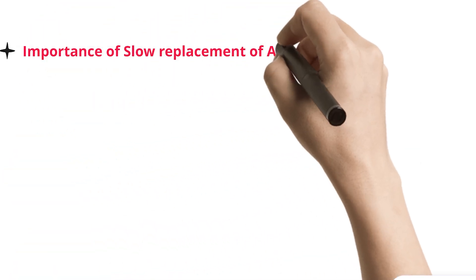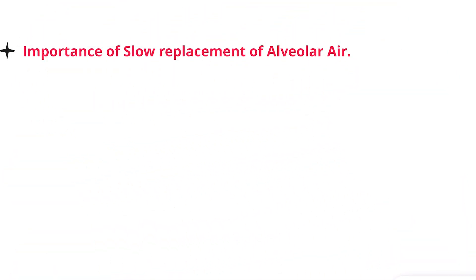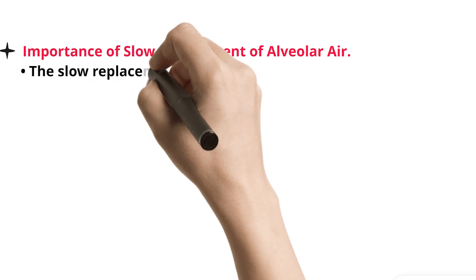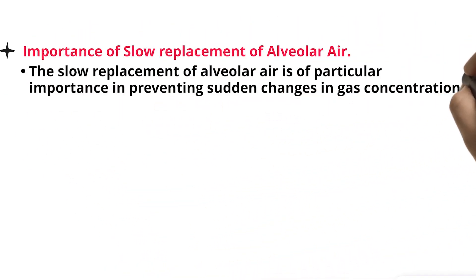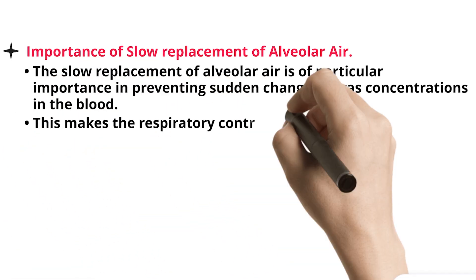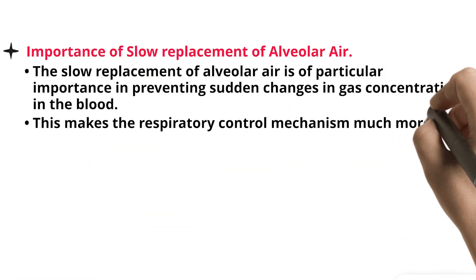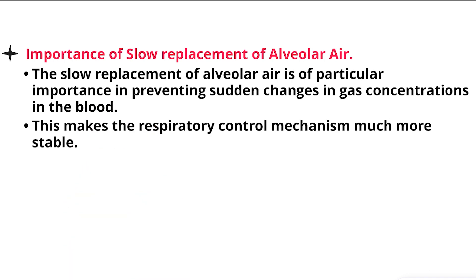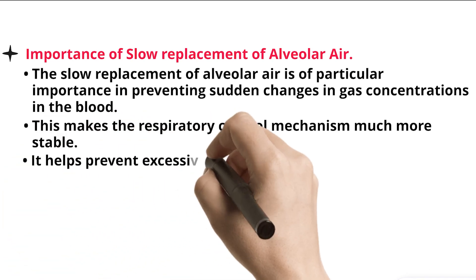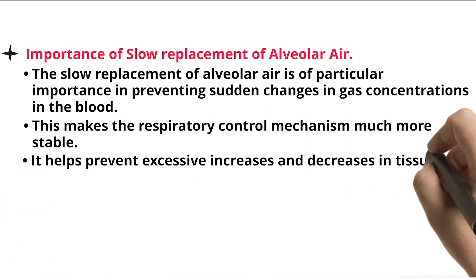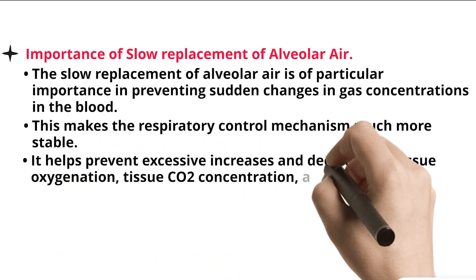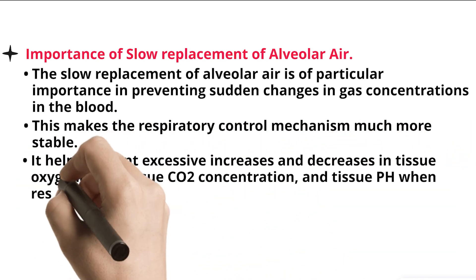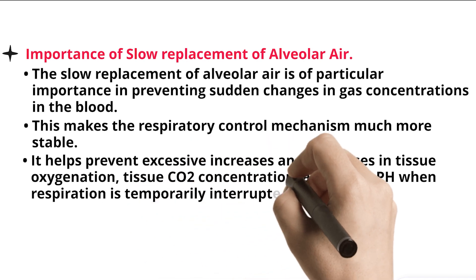The importance of slow replacement of alveolar air is of particular importance in preventing sudden changes in gas concentrations in the blood. This makes the respiratory control mechanism much more stable. It helps prevent excessive increases and decreases in tissue oxygenation, tissue carbon dioxide concentration, and tissue pH when respiration is temporarily interrupted.